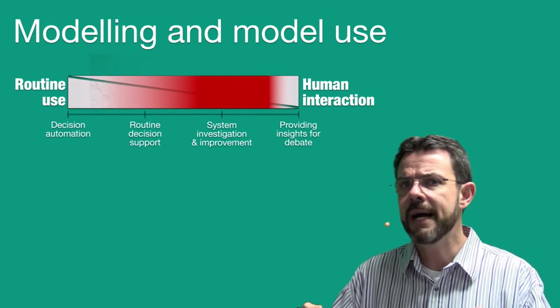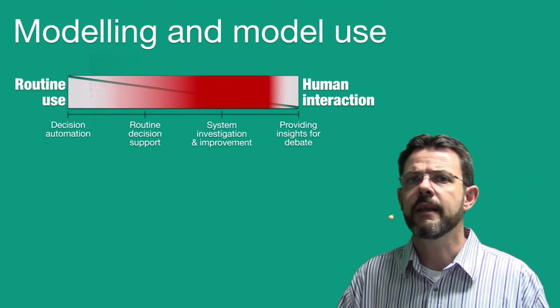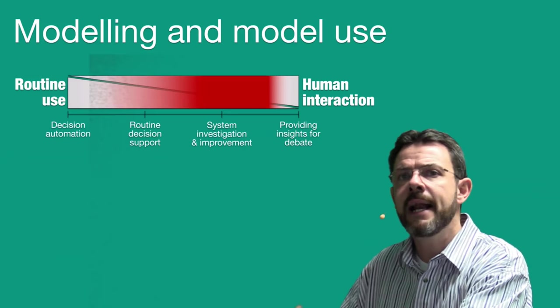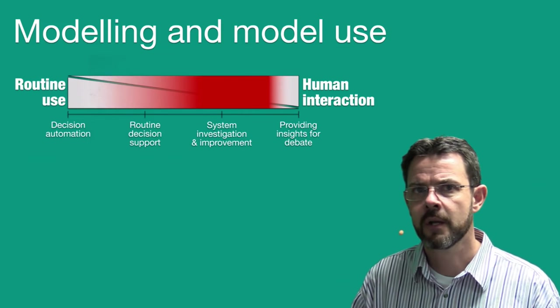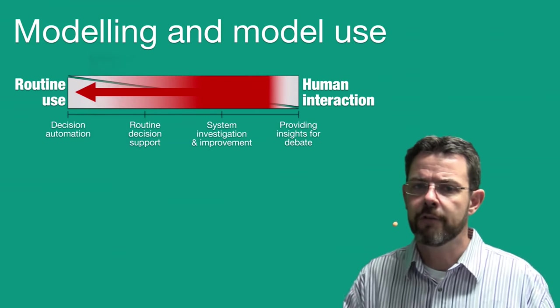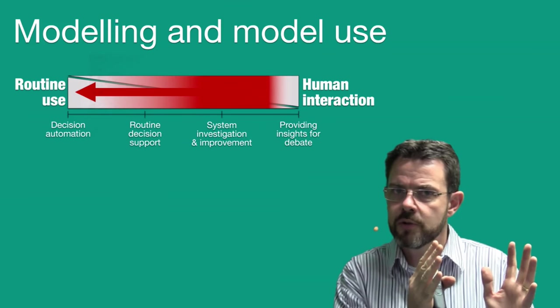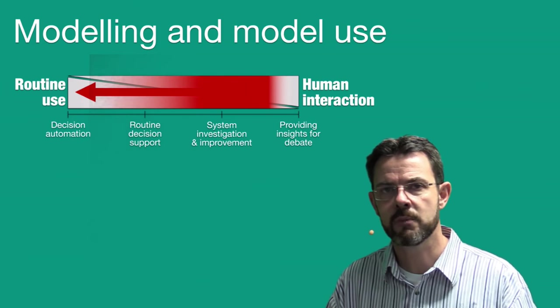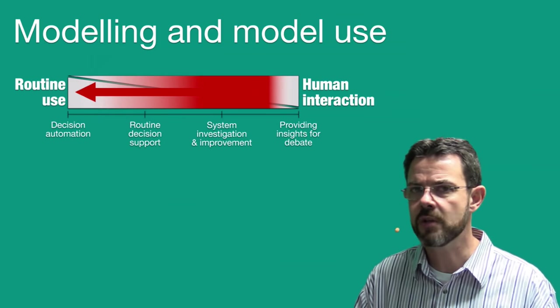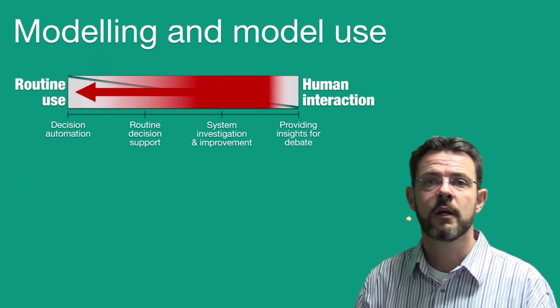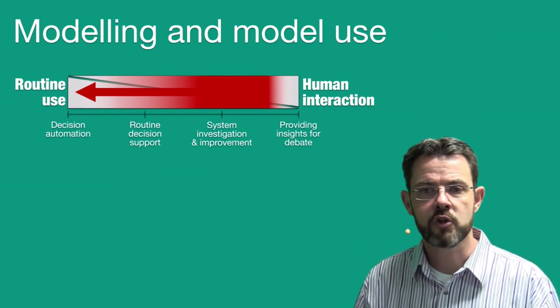We build models, we investigate the system, we fine-tune the models, and then in the end, we actually part with our own models and hand them over to the clients. So as models mature, they actually move from investigation models all the way to decision automation models. So sometimes you need to start with just getting the insight and then moving along as the models actually mature.